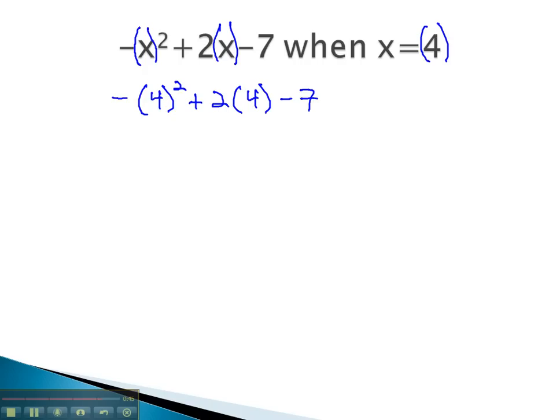In this case, the exponent is only on the 4, so that will be positive 4 squared, giving us negative 4 squared, or 16, plus 2 times 4, minus 7. Multiplying would be our next step, giving us negative 16, plus 8, minus 7.